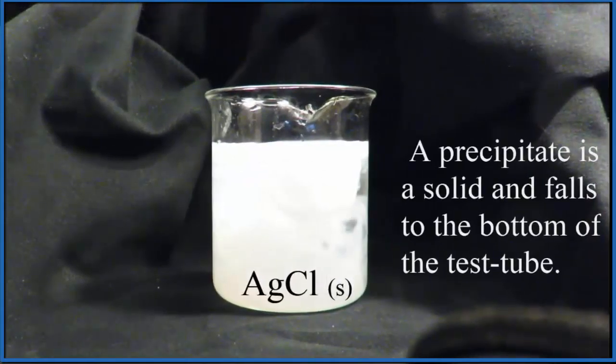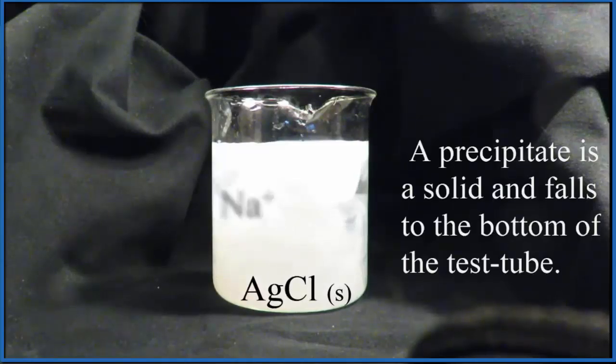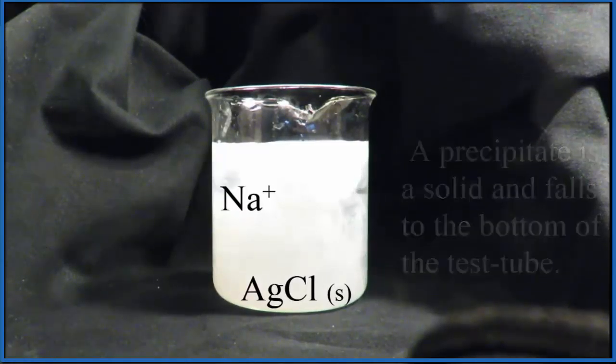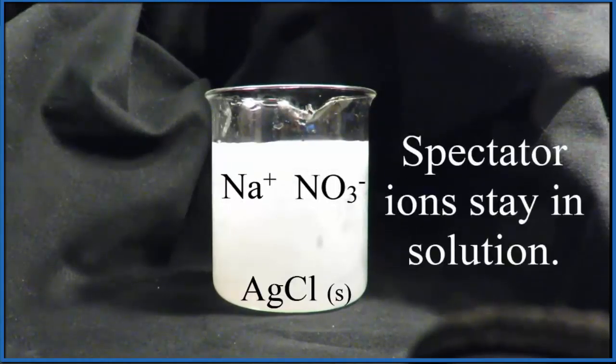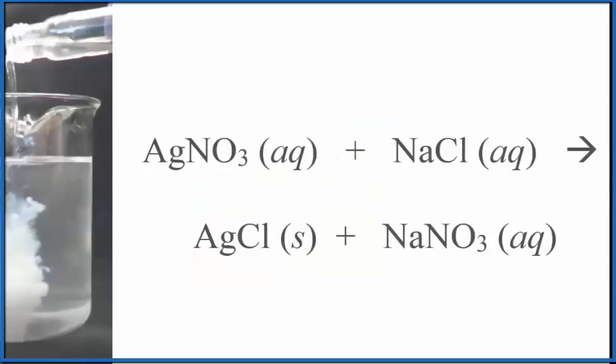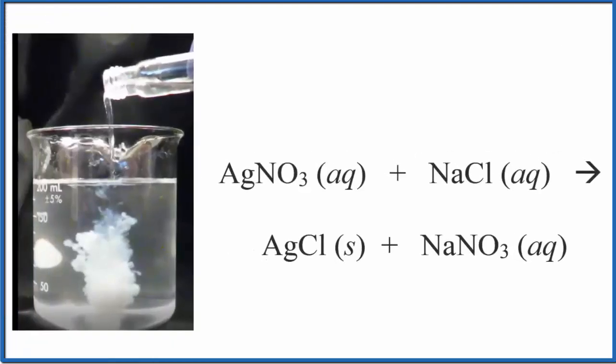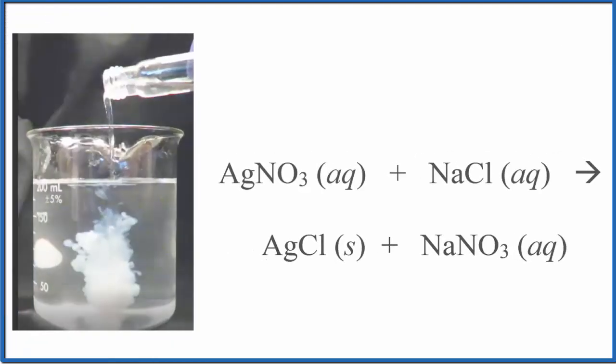In the beaker, though, what's going to be left is that NaNO3. It's going to be sodium ions and nitrate ions just floating around. So they haven't changed. We call those spectator ions. This is Dr. B with an example of a precipitation reaction. Thanks for watching.